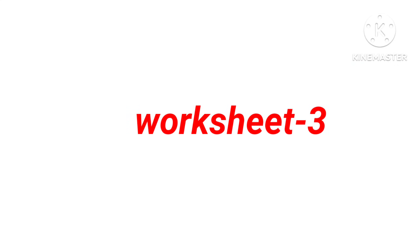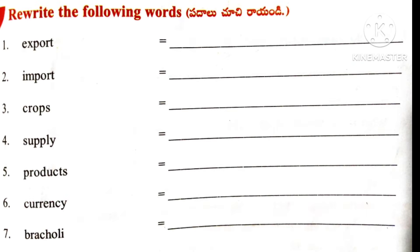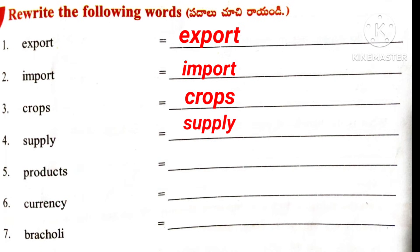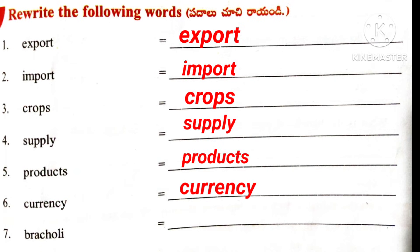Worksheet 3, Roman number 1. Rewrite the following words: Export, Import, Crops, Supply, Products, Currency, and Broccoli.